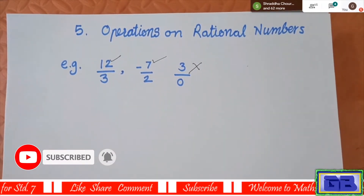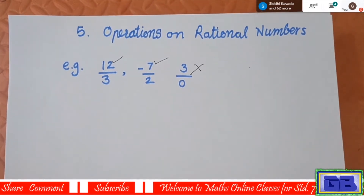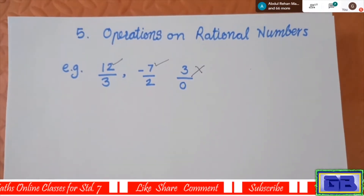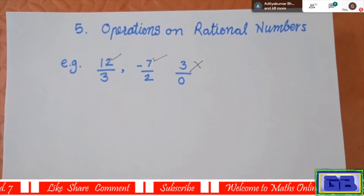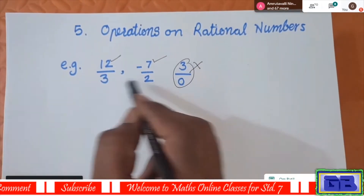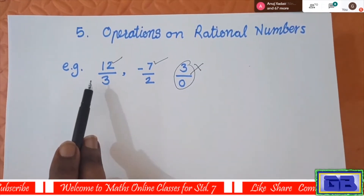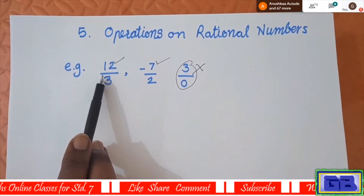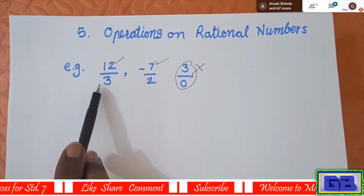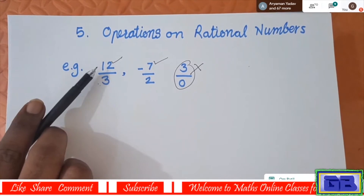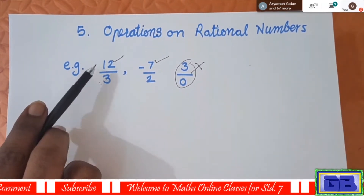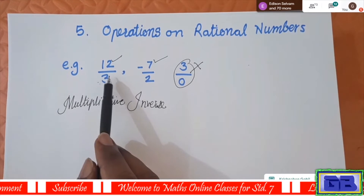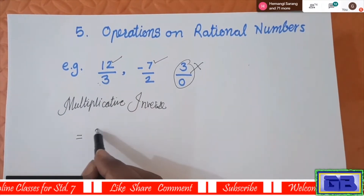Now we have to learn the four basic operations: addition, subtraction, multiplication, and division. We also need to learn reciprocal, or multiplicative inverse. If I ask you to find the multiplicative inverse of a number, it means you have to exchange the places of the numerator and denominator — where the numerator is, shift the denominator, and where the denominator is, shift the numerator.